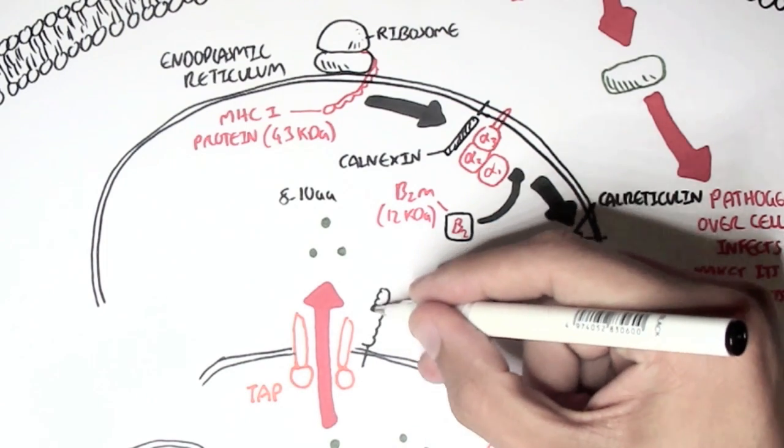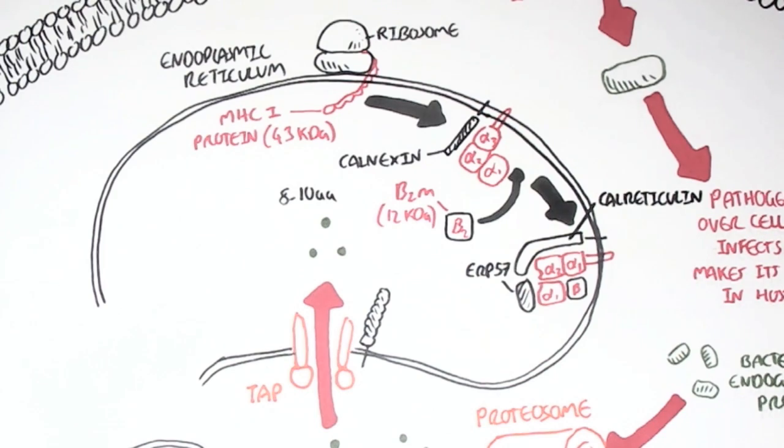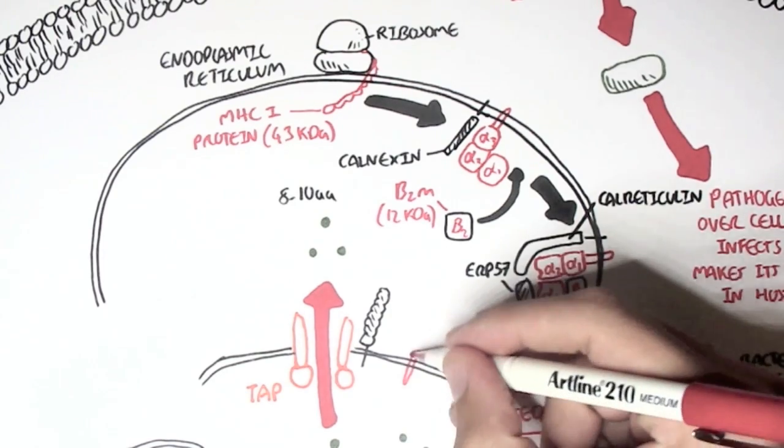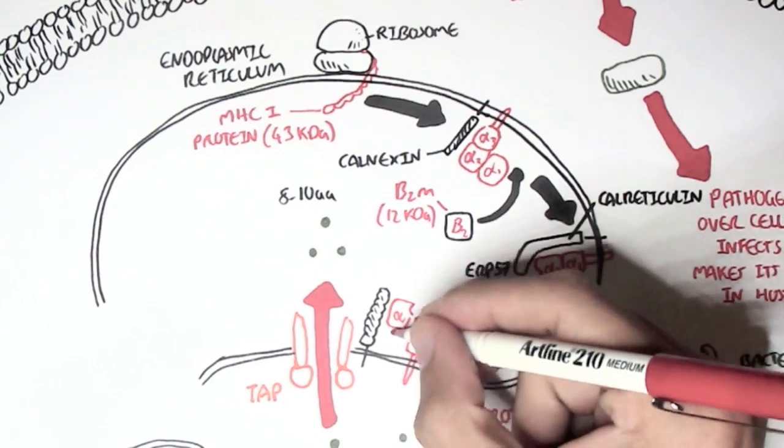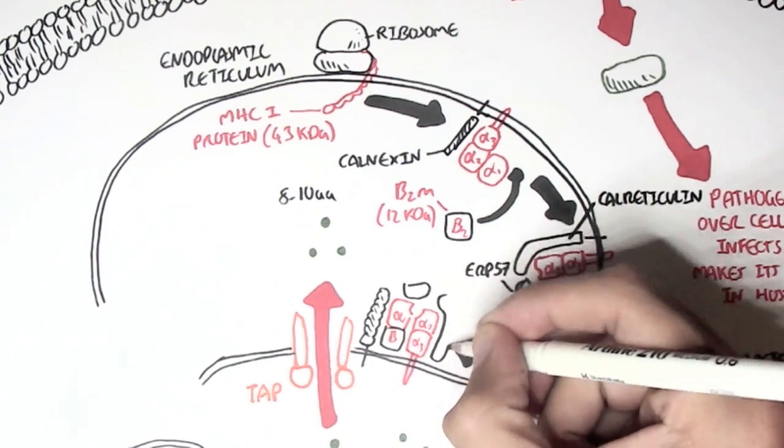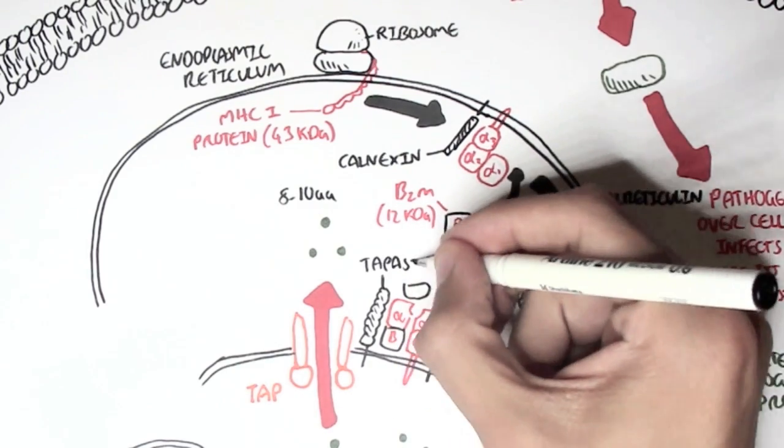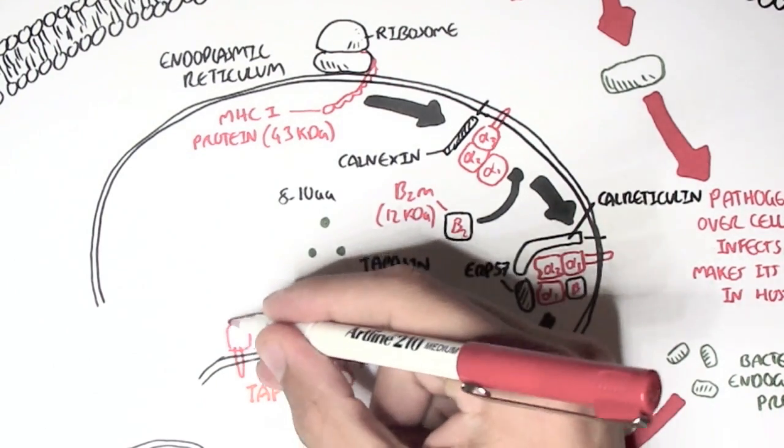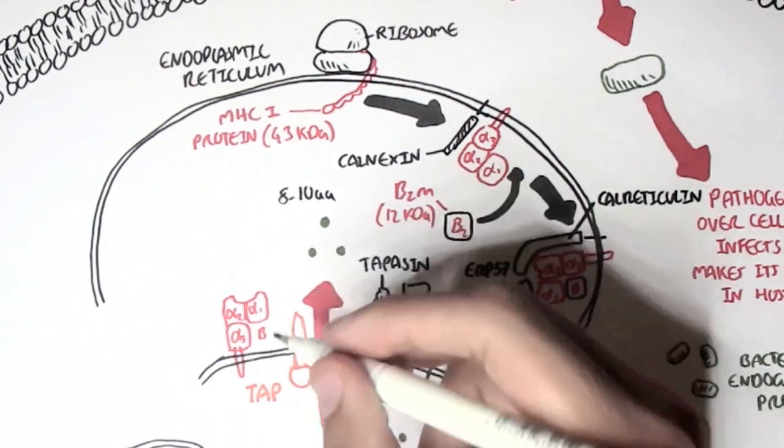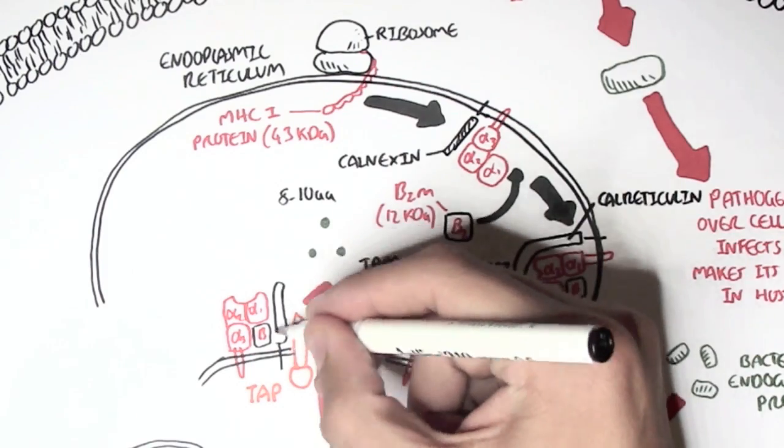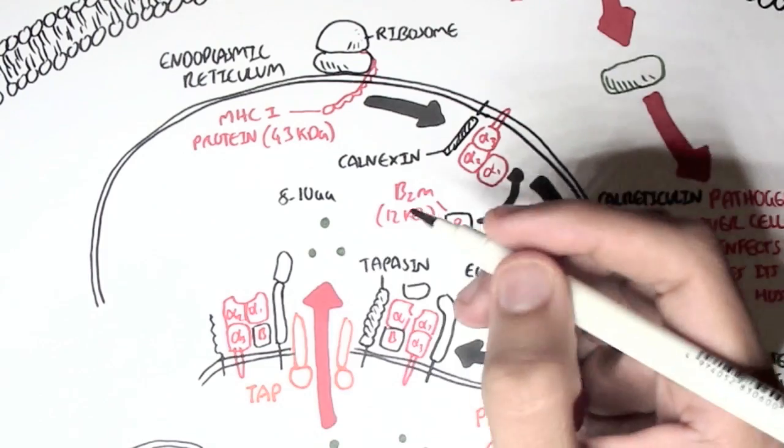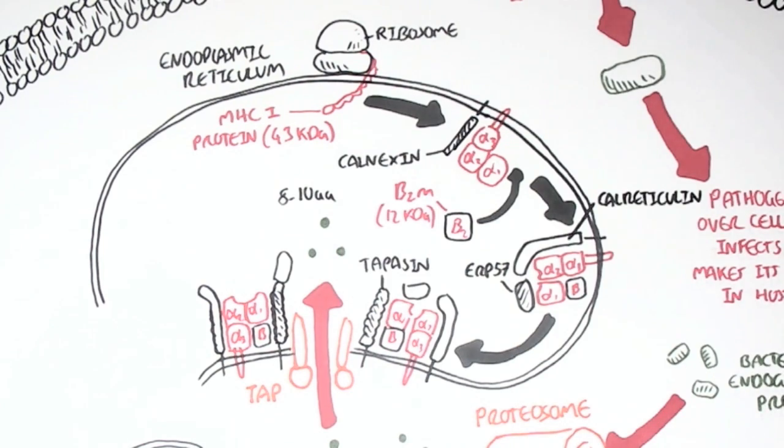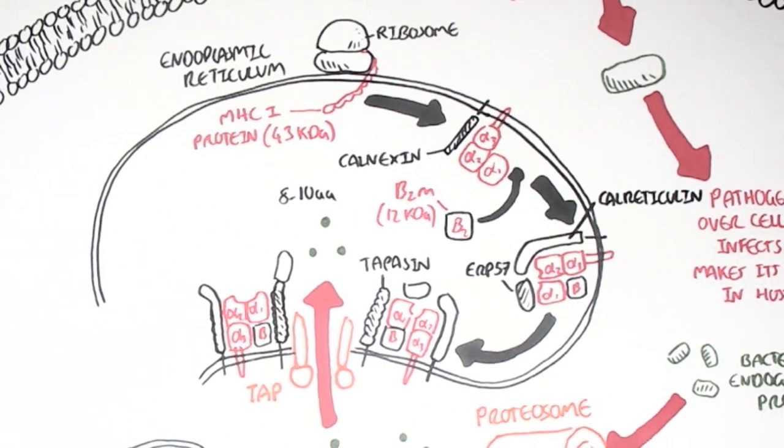Further, the calreticulin and ERP57 will act as a chaperone, and it will bring the MHC class 1 molecule towards the TAP transporter, while the MHC class 1 will interact with another protein called tapacin. When it interacts with tapacin, ERP57 and calreticulin will disassociate, which will allow these small peptide fragments that are in the endoplasmic reticulum, the small bacterial peptide fragments, to bind onto the binding groove of the MHC class 1.